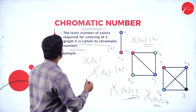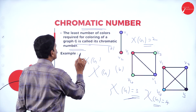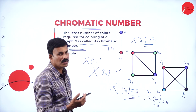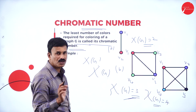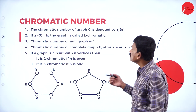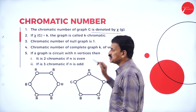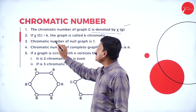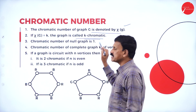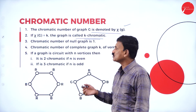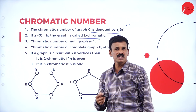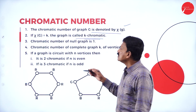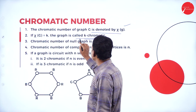The least number of colors required for coloring a graph is called the chromatic number — this is a very important concept. In the examination they may ask regarding the chromatic number of a graph. The chromatic number of a graph G is denoted as Xi(G). If Xi(G) equals K, then the graph is called K-chromatic — for example, 2-chromatic, 3-chromatic, or 4-chromatic graph.